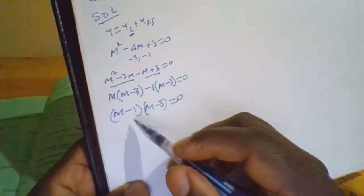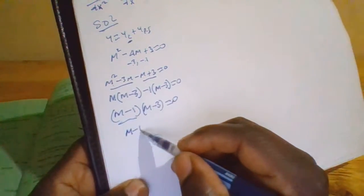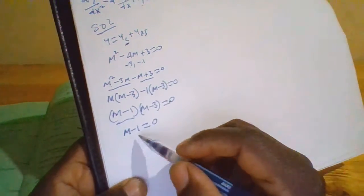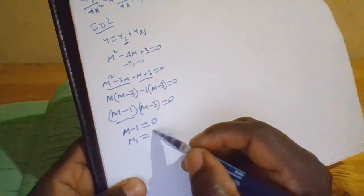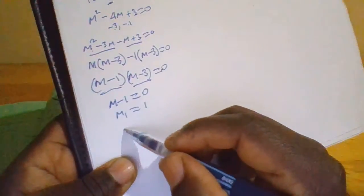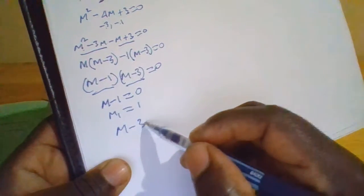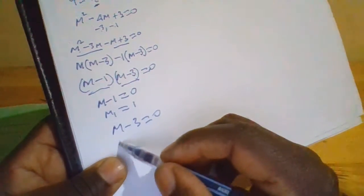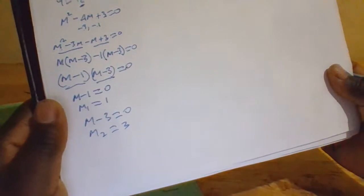From m minus 1 equals zero, we get m₁ equals 1. From m minus 3 equals zero, we get m₂ equals 3. These are the two roots of the auxiliary equation.